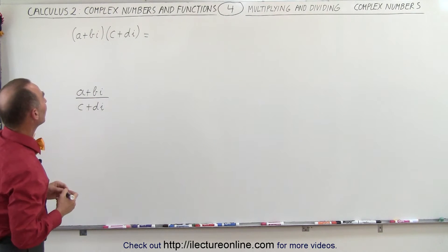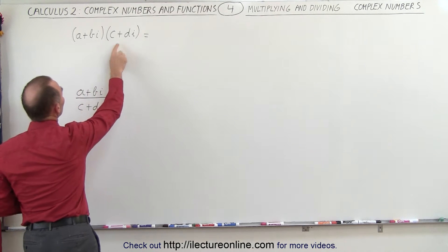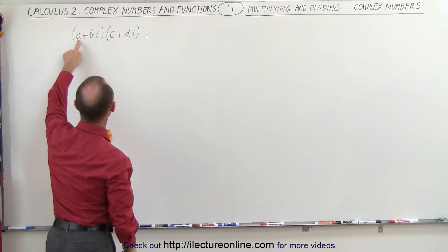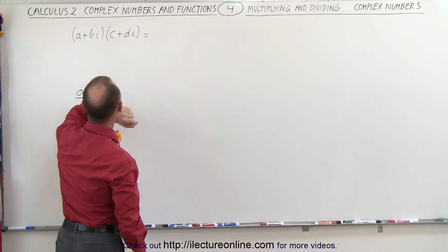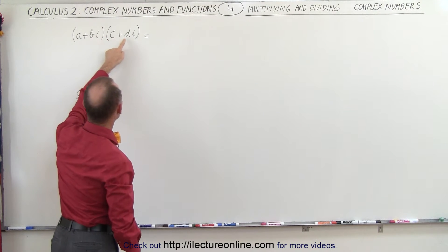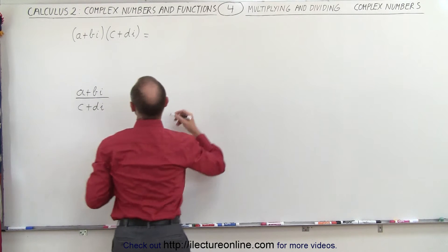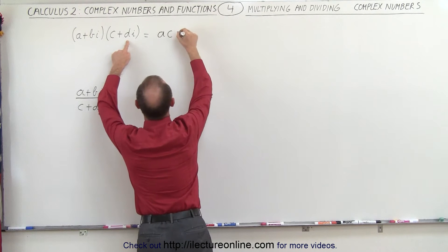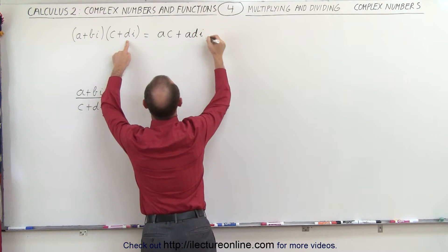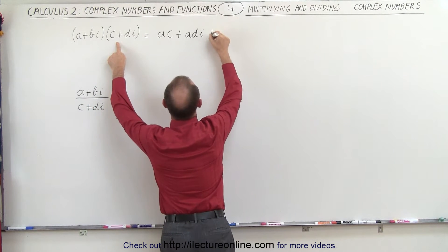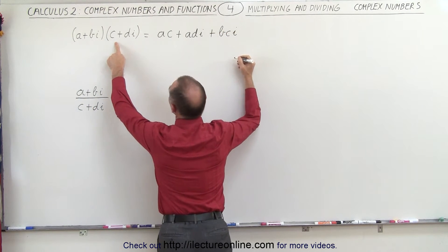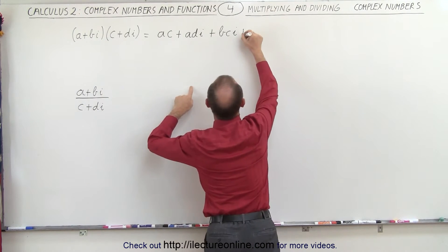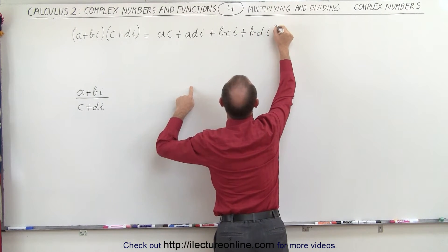Let's start with the easy one. When we multiply two complex numbers together, we simply multiply just like we would two binomials. We take the first term of the first binomial and multiply it times each of the two terms of the second. Then we take the second term and multiply it times each of the two terms there. So that becomes: A times C, plus A·D·i, plus B·C·i, and then B·i times D·i becomes plus B·D times i-squared.